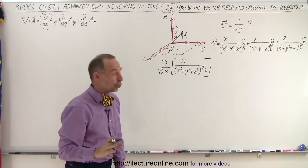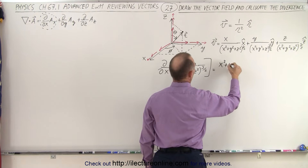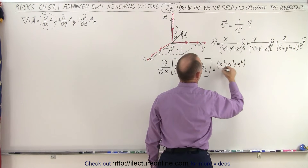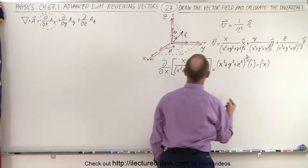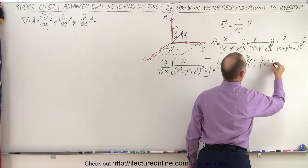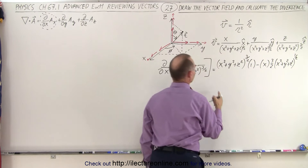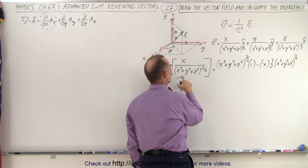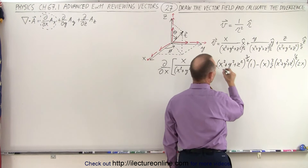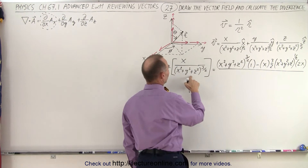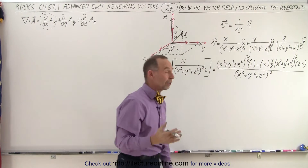We're going to need to use the quotient rule. That is equal to the denominator, which is x squared plus y squared plus z squared to the 3 halves power, times the derivative of the numerator with respect to x, which is 1, minus the numerator x, times the derivative of the denominator, which is 3 over 2 times x squared plus y squared plus z squared to the 1 half power — because we take one away from the exponent — times the derivative of what's inside with respect to x, which is 2x. All that divided by the denominator squared, which gives us x squared plus y squared plus z squared to the 3rd power.